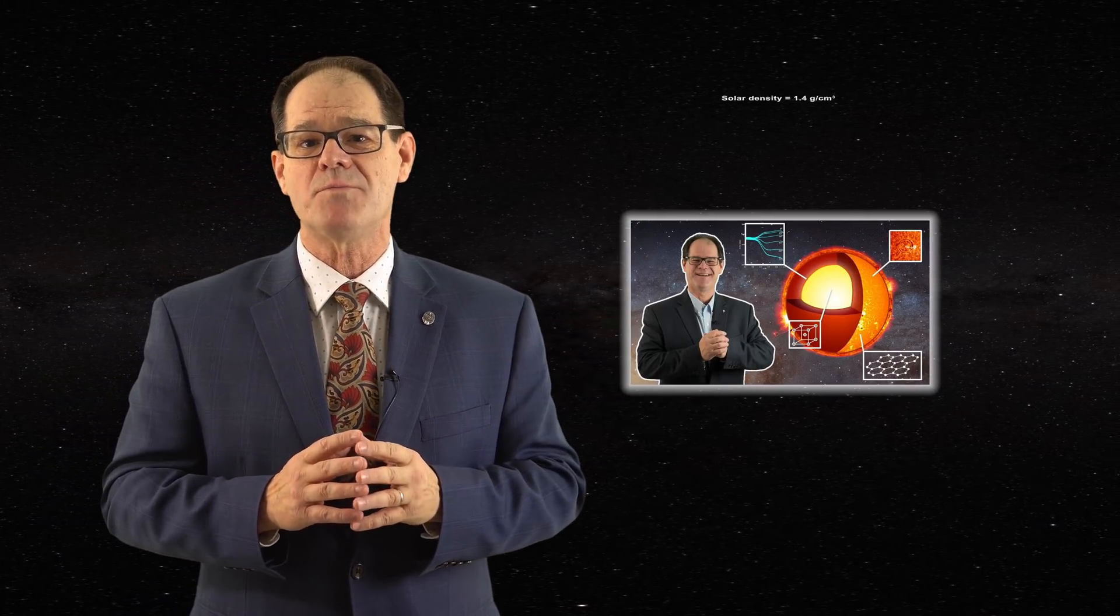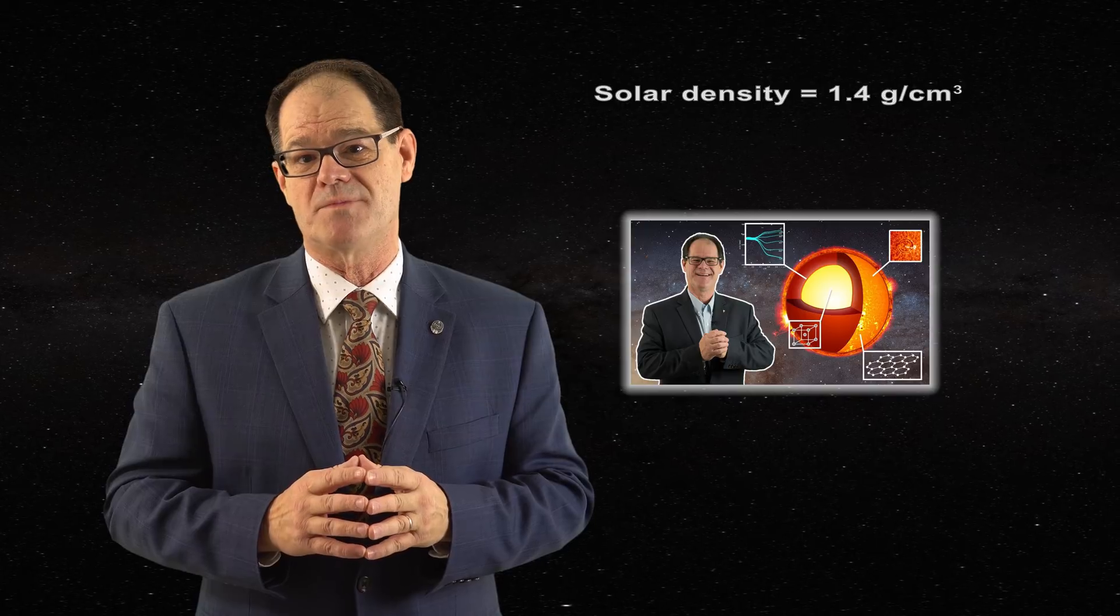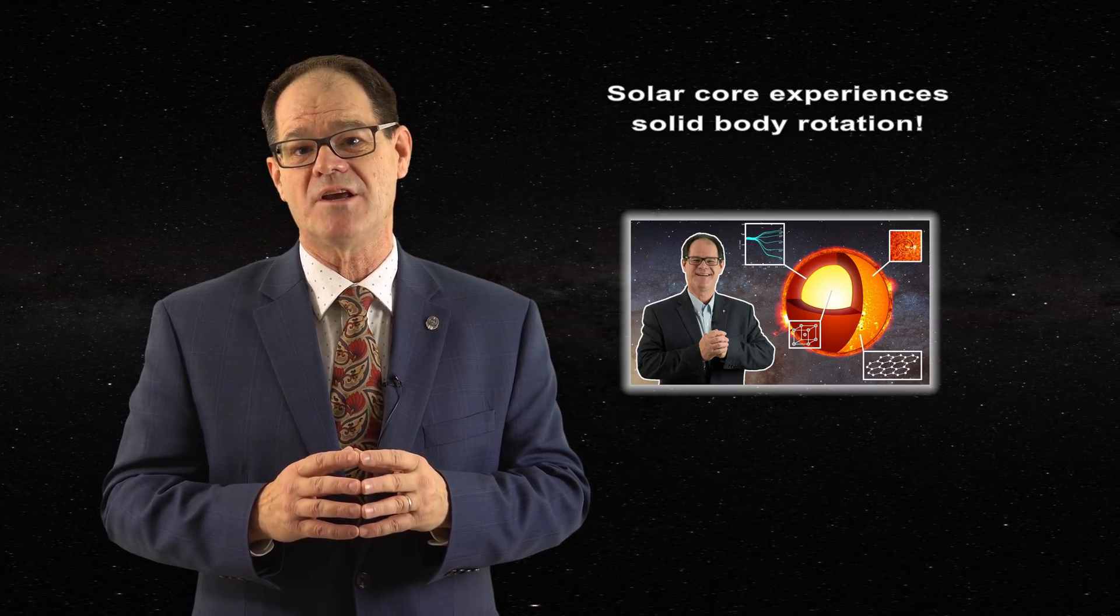The fact that the Sun is comprised of condensed matter leads us to recognize that stellar material is essentially incompressible. This was something which James Jeans had argued long ago. Recall from this video that the Sun has an average density of approximately 1.4 grams per centimeter cubed. In addition, the Sun has a core which experiences solid body rotation. Consequently, the center of the Sun cannot be hollow.